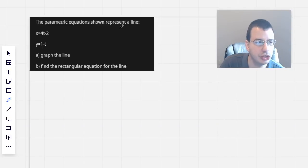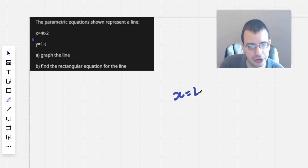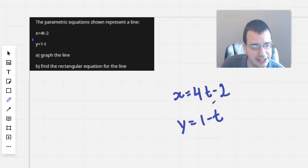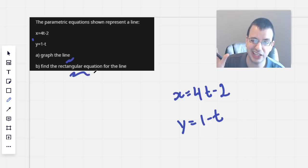The parametric equations shown represent a line. We have x equals 4t minus 2 and y equals 1 minus t. The first thing we're going to do is graph the line and find a rectangular equation for the line.